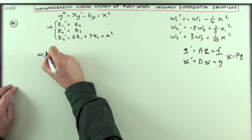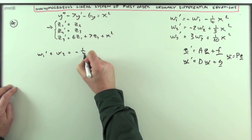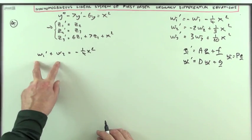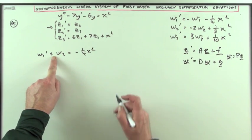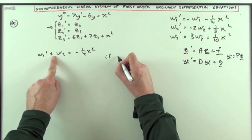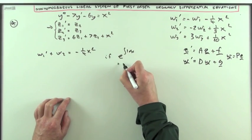Now just to solve these three and they're straightforward. We're taking the first one. w1' + w1 equals negative a quarter x squared. That's almost exact. An integrating factor would sort that out. The integrating factor would be e to the integral of just 1 dx. That's e to the x.